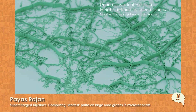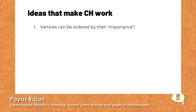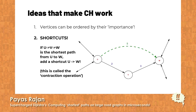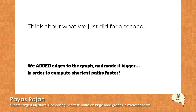An interesting variant of this approach is called Contraction Hierarchies, or CH, where every node is given a place in the hierarchy. Once the hierarchy of nodes is defined, we apply the operation that gives CH its power: shortcuts. Simply put, if the shortest path from U to W passes through V — meaning U→V→W is a shortest path — then we add a shortcut edge directly from U to W. Any Dijkstra search that reaches U can then bypass V altogether. This is called the contraction operation.